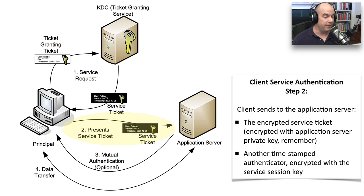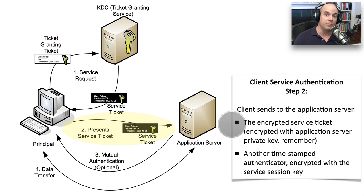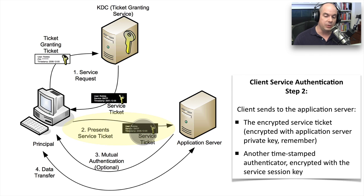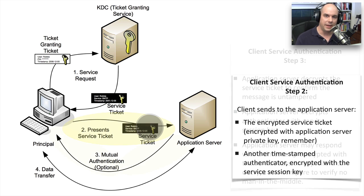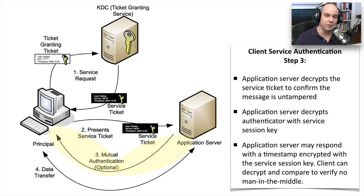In the next step, we finally talk to our application server. We send along that encrypted service ticket we received from the Ticket Granting Service, encrypted with the private key we know nothing about, so we want to be sure we're providing exactly the same package to the application server. We also send an authenticator containing a timestamp, encrypted with our service session key. The application server decrypts the service ticket with its private key, checks the information inside, and also verifies the authenticator, confirming that the session key matches what it's expecting.